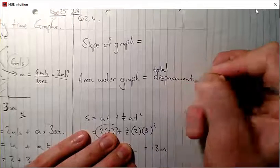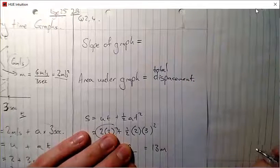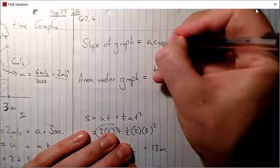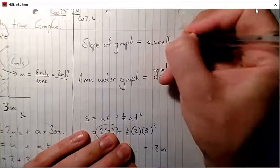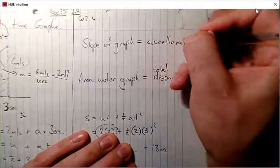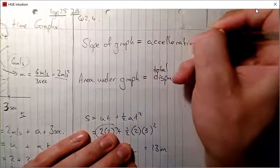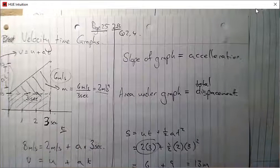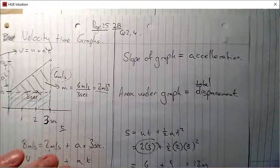The area under a velocity-time graph equals the total displacement, and the slope of the graph equals the acceleration. We're going to use both of those tricks to work on questions 2 and 4 from Exercise 2B, page 25.